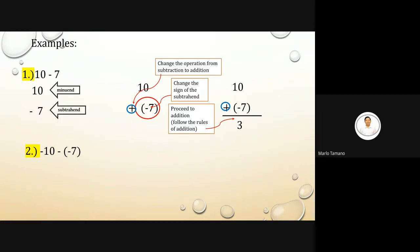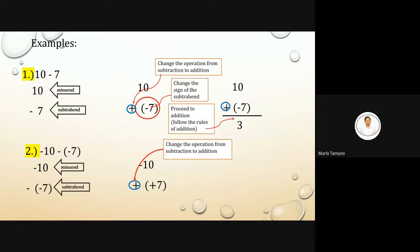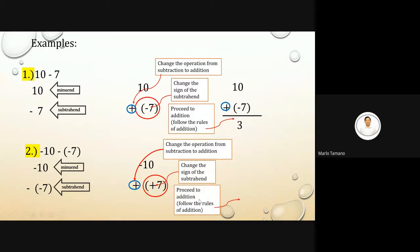Example two: negative ten minus negative seven. Step one: change the operation from subtraction to addition. Step two: change the sign of the subtrahend — from negative, make it positive. Step three: proceed to addition. Negative ten plus positive seven gives us negative three.